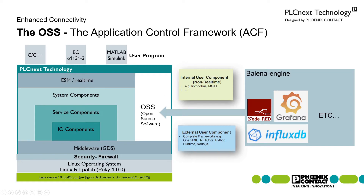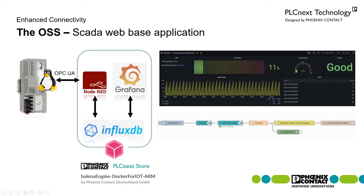The PLC also has an open source software section that can be used like a Linux PC. In that section, I will install Node-RED, Grafana, and InfluxDB. This is done through the app store — when using this PLC, you have access to an app store with around 250 apps. One of them is the Balena Engine Docker, which allows you to install Docker containers on the PLC.